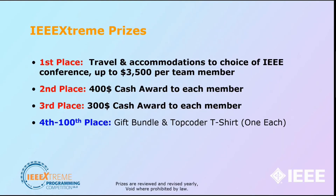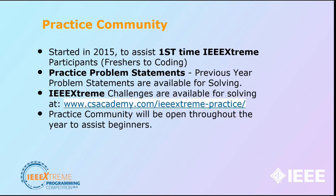Now the most exciting part — the prizes for IEEE Xtreme. First place gets travel and accommodation plus $3,500 per team member. Second place gets a $400 cash reward to each member. Third place gets a $1,500 cash reward to each member. Fourth place also gets a $400 cash reward, and teams from fourth to hundredth place will receive a gift bundle and a top 100 T-shirt.